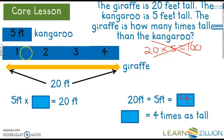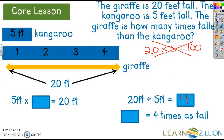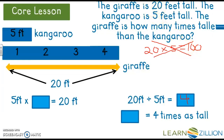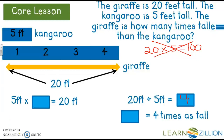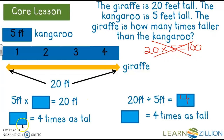You don't really need the bar model as much for division, but it's a good visual. 20 divided by 5 equals 4, so 4 fits into those blocks. That makes a lot more sense that the giraffe is 4 times taller — not 100 times taller — because 5 times 4 equals 20. So the giraffe is 4 times as tall as the kangaroo.